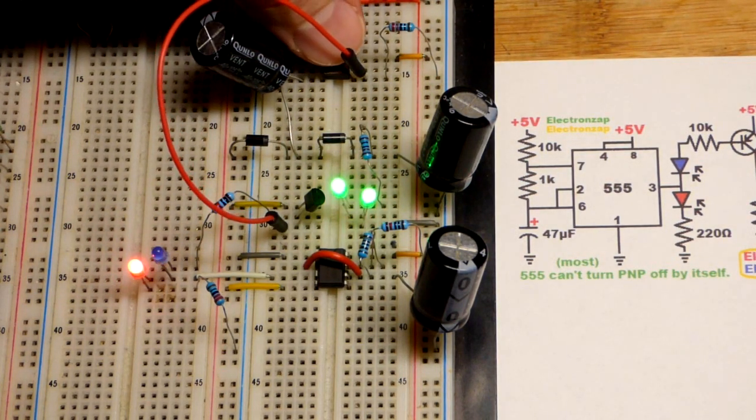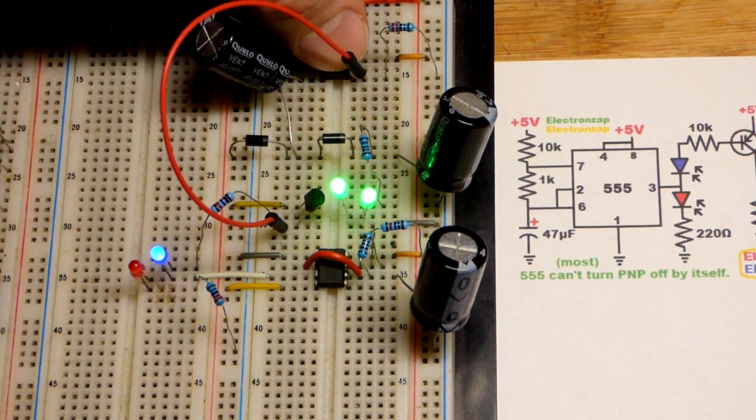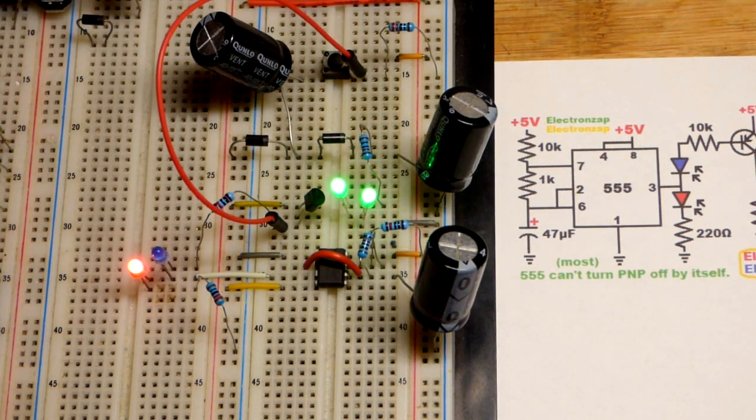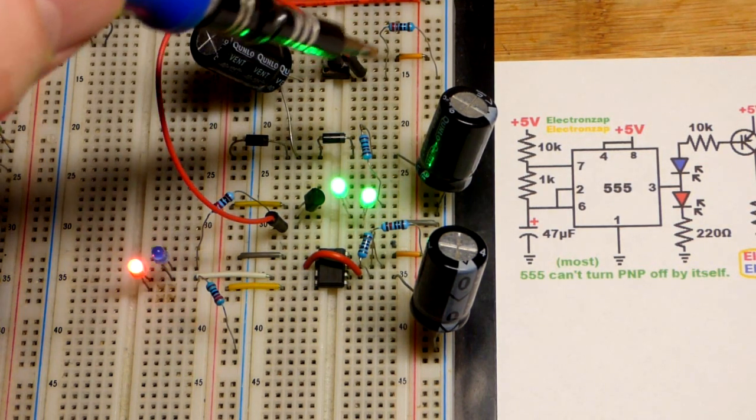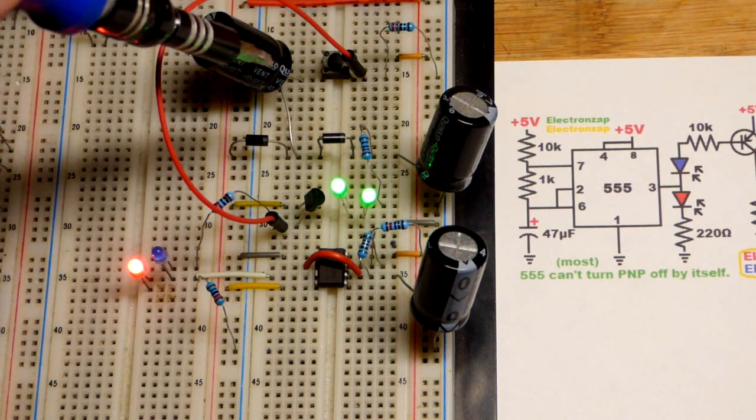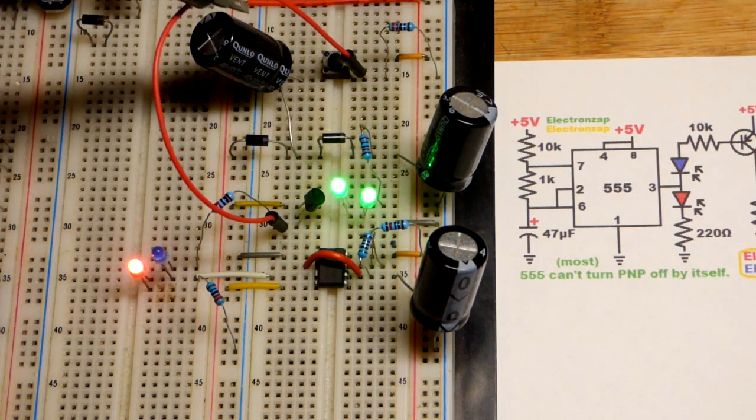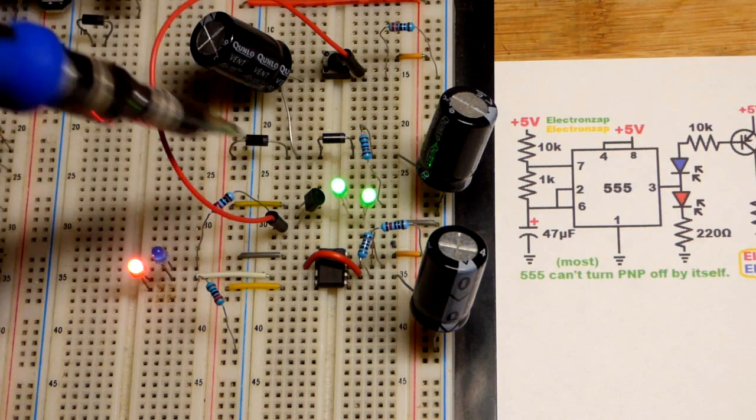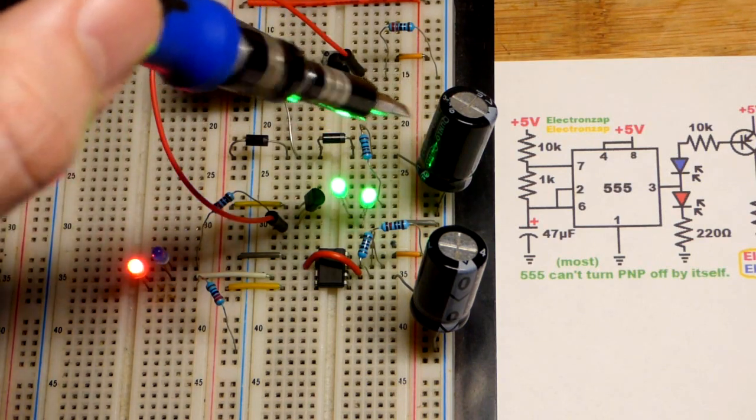Like pressing the PNP bipolar junction transistor wire to switch just like if I hit the button over there and makes a direct connection. And that gets the voltage difference across the charge capacitor.